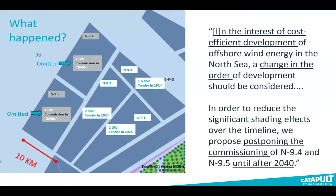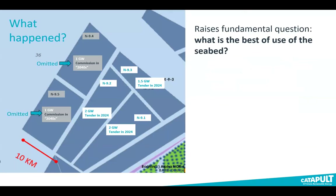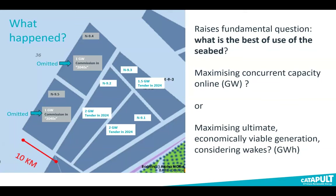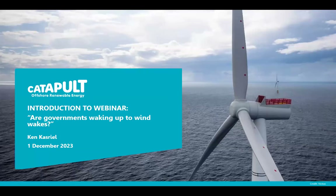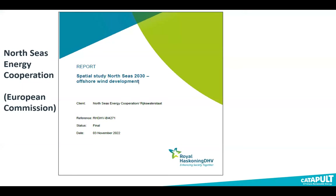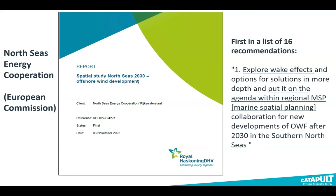Interestingly, the European Commission's construction schedule published the following month left those problematic farms off — whether coincidence or not. This raises a fundamental question: do we want to maximize concurrent installed capacity regardless of what wakes are doing to actual generation, or do we want to focus on achievable economically viable generation considering wakes? The EC report's first recommendation among 16 is to put this squarely within the marine spatial planning framework.